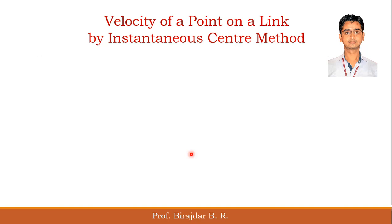We will see how to find the velocity of a point on a link by using the instantaneous center method. Suppose this is one link AB on which there are two points: point A and point B.